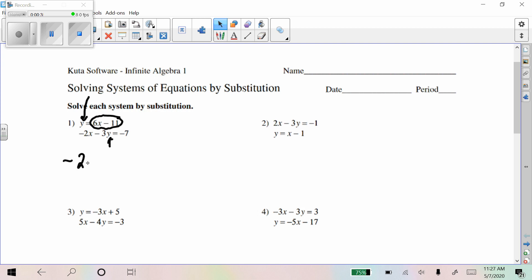So I'm going to write negative 2x minus 3y, the bottom equation. Instead of the y, because I want to put something in place of that y, I'm going to put parentheses there. And then I just write the rest of the equation. Now the thing I'm going to put in there is 6x minus 11, what y is equal to.